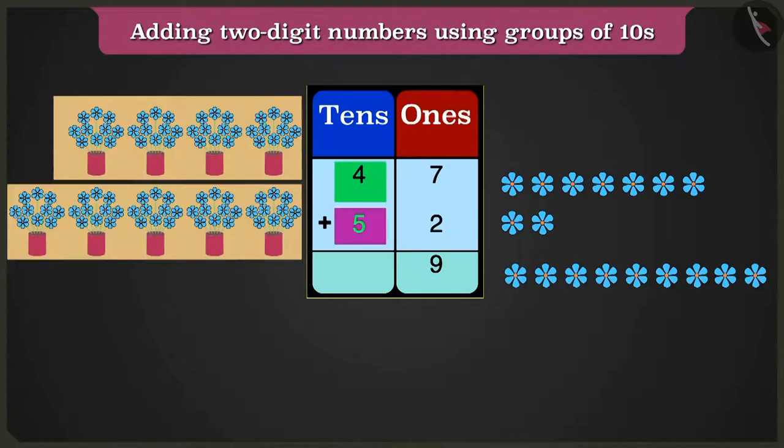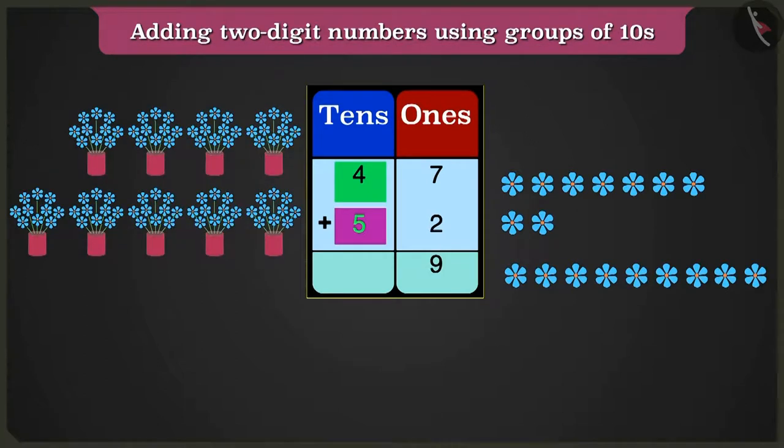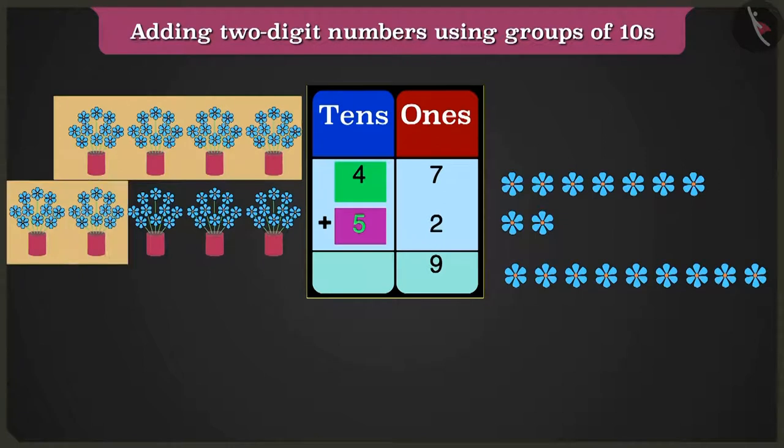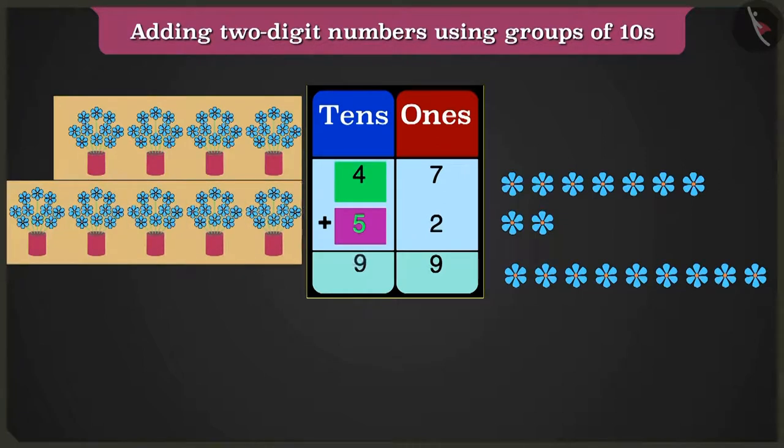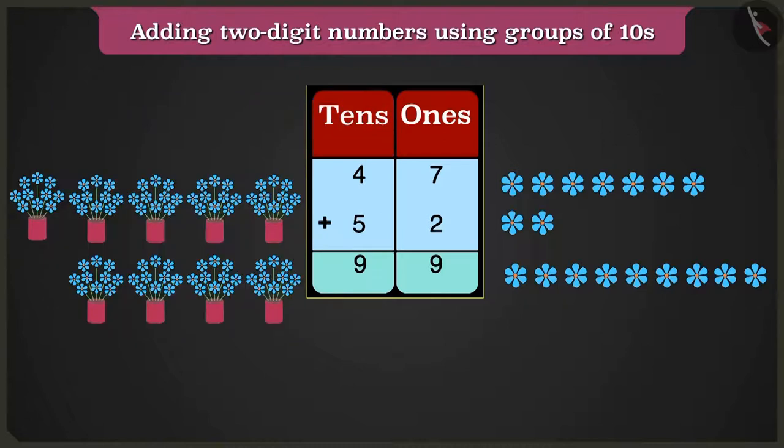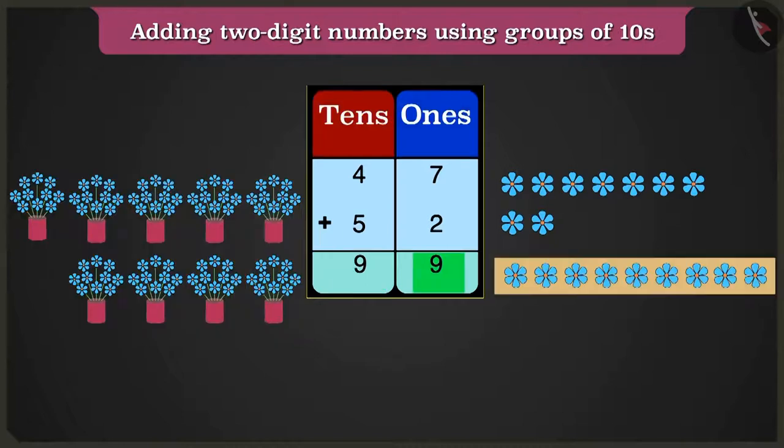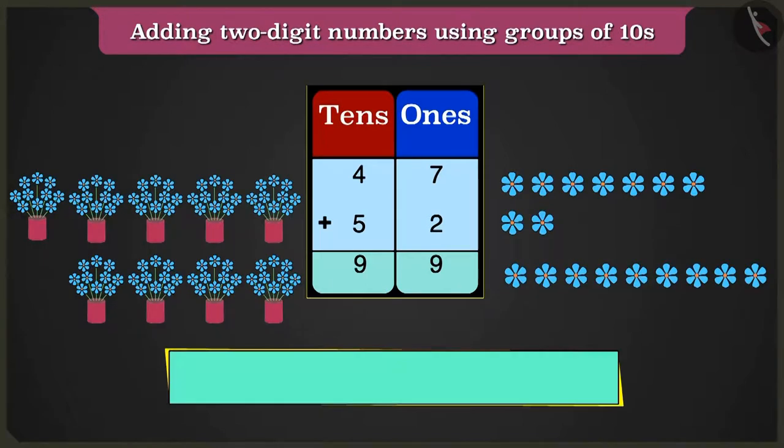Now in the box of tens, four added to five, count after four. Five, six, seven, eight and nine is what we get. Hence, there are nine tens and nine ones. So Bunty and Bubbly's drawing have a total of ninety-nine flowers.